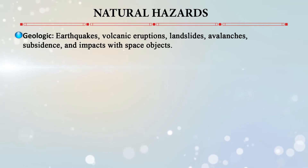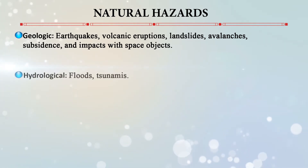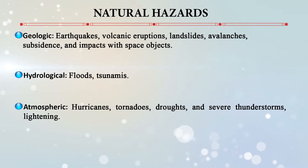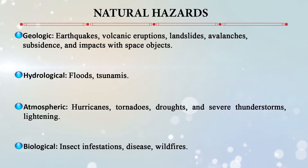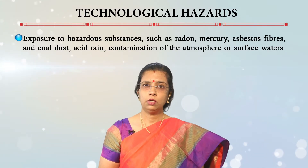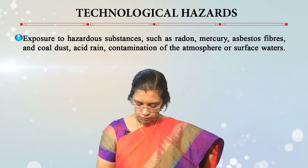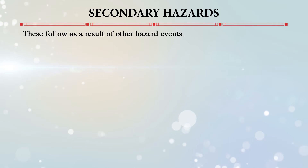Natural hazards can be classified into geologic examples — earthquakes, volcanic eruptions, landslides, avalanches, subsidence, and impacts with space objects; hydrological — floods and tsunamis; atmospheric — hurricanes, tornadoes, droughts, severe thunderstorms, and lightning; and biological — insect infestations, disease, and wildfires. Technological hazards include exposure to substances such as radon, mercury, asbestos fiber, and coal dust, and acid rain contaminating the atmosphere and surface waters.